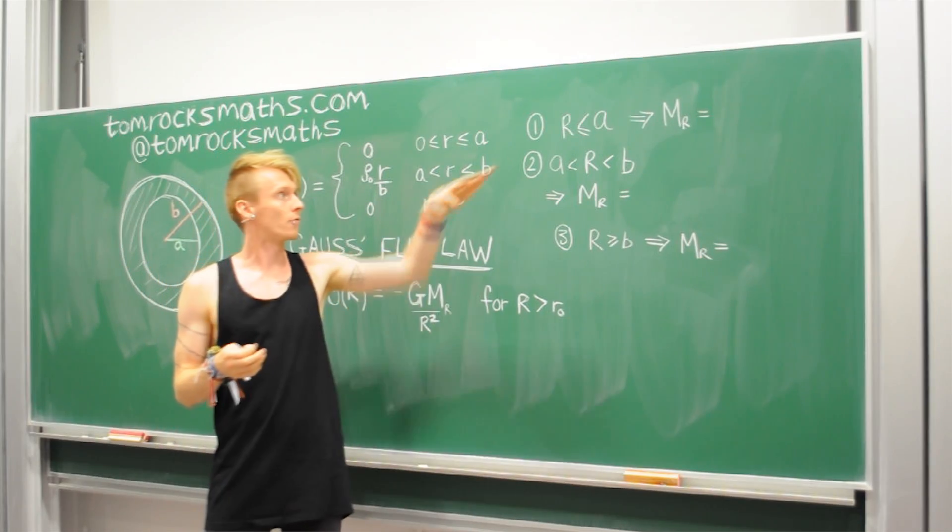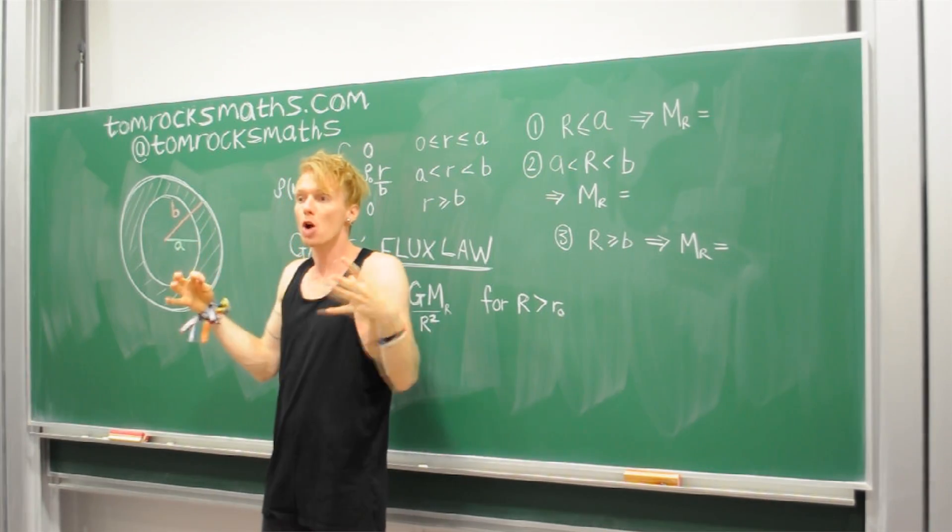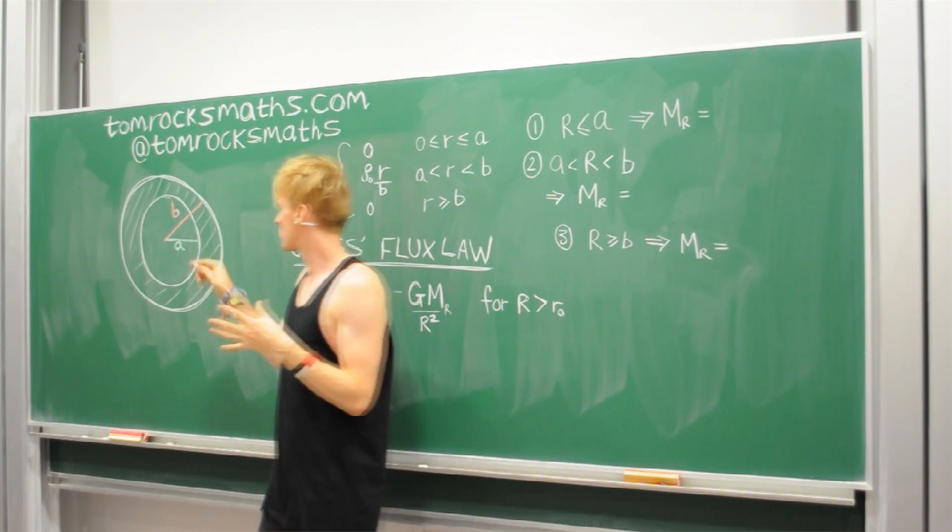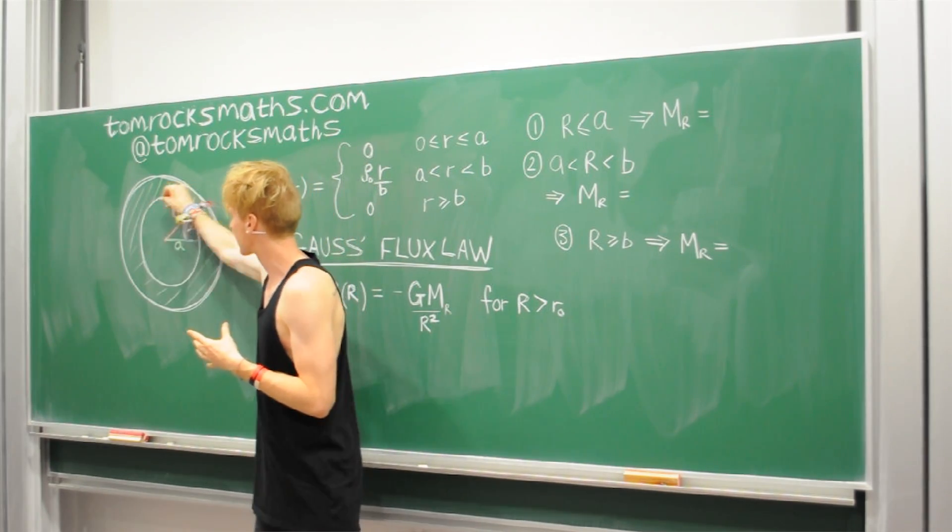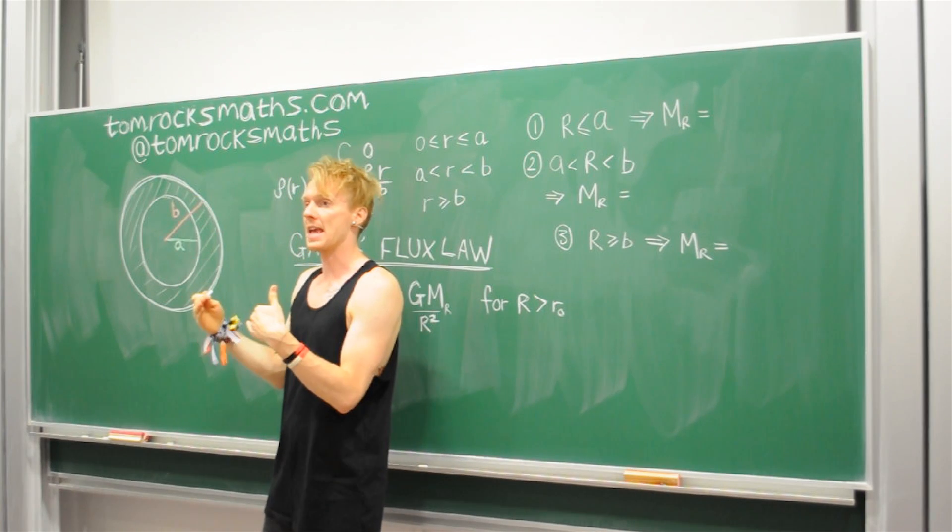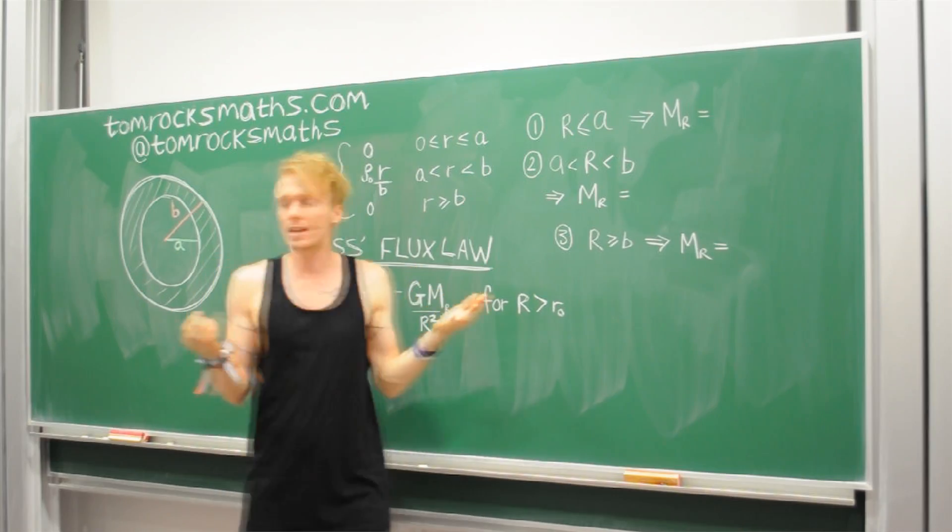First case, for the radius less than or equal to A, so we're inside the planet, there's no mass inside us. We can draw any ring, any radius R, from the centre, as long as we're inside A. And there's never any mass inside of us. So MR here is simply just zero.